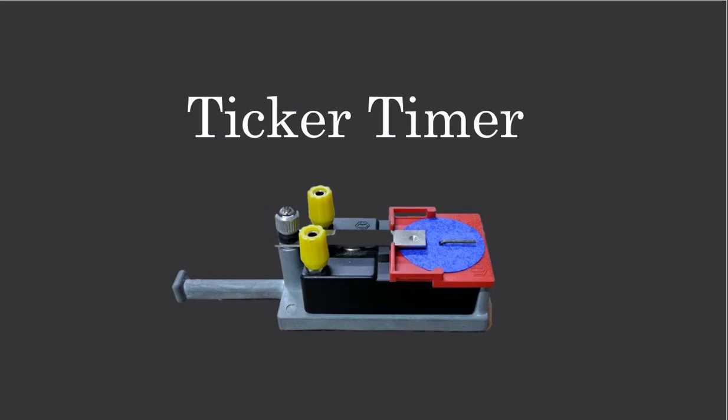In this tutorial video we will be looking at how we can use the ticker timer to measure the rate of acceleration of a falling object.